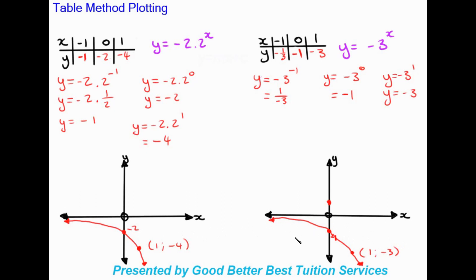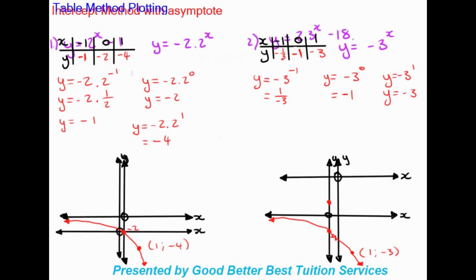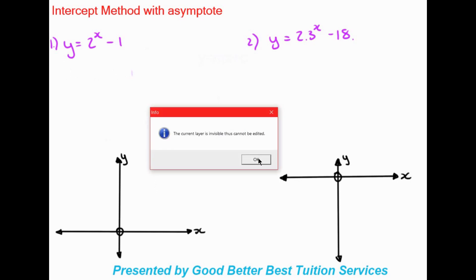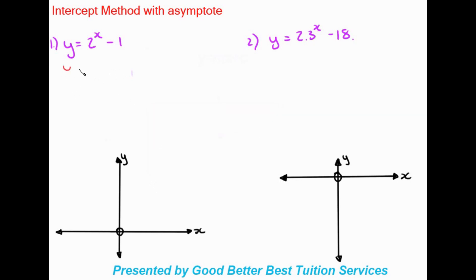Now we look at a different method — the intercept method — which can only be used when we have asymptotes involved. Remember: to find the x-intercept we make y = 0, and to find the y-intercept we make x = 0. Let's find the y-intercept first by making x = 0: y = 2^(0) - 1 = 1 - 1 = 0.